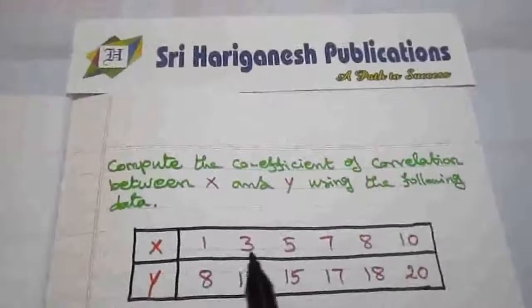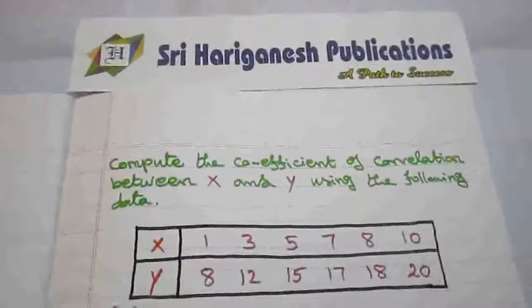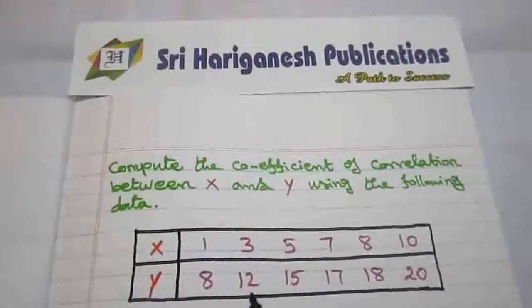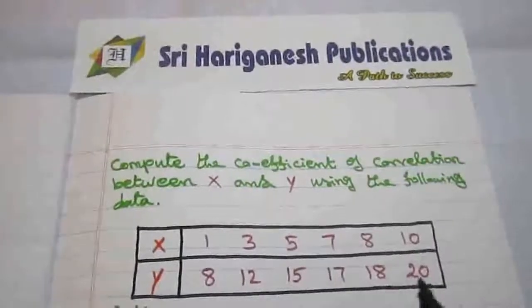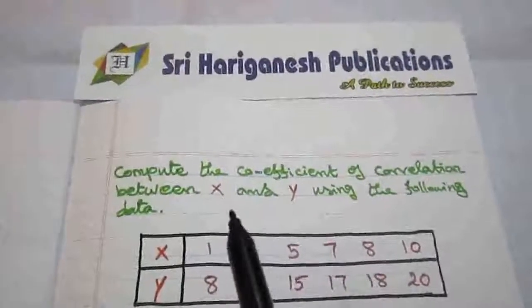x has values 1, 3, 5, 7, 8, 10. y has values 8, 12, 15, 17, 18, 20.